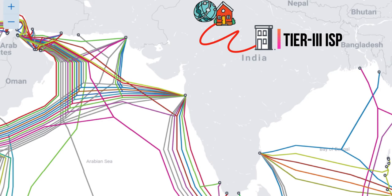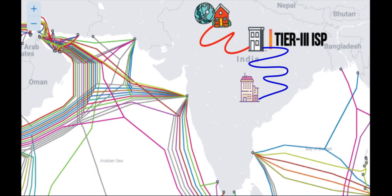The problem with tier 3 ISPs is they are not located across large geographical areas — they are limited to small distances, mostly near residential areas. For example, in a society with a hundred houses, the tier 3 ISP installs their server room and network room and provides internet service directly. But to provide this service, they have to take service from another ISP, known as tier 2 ISP, also called the upstream provider.